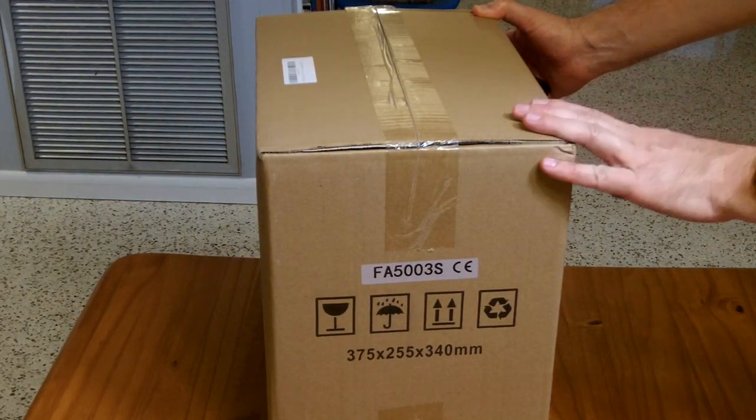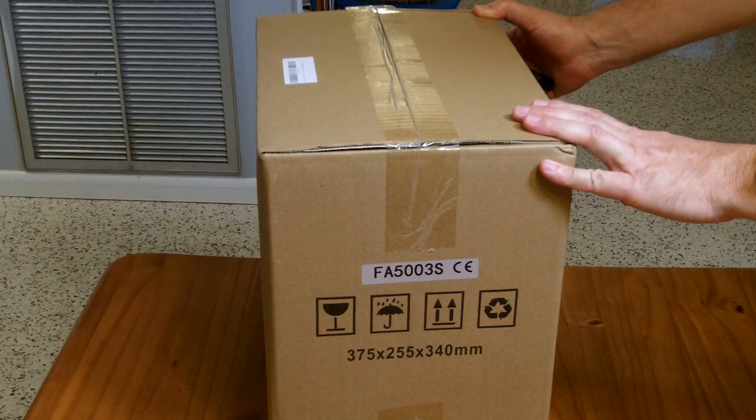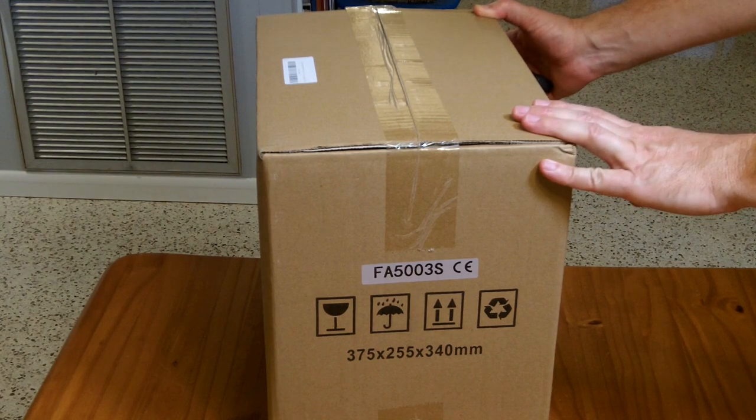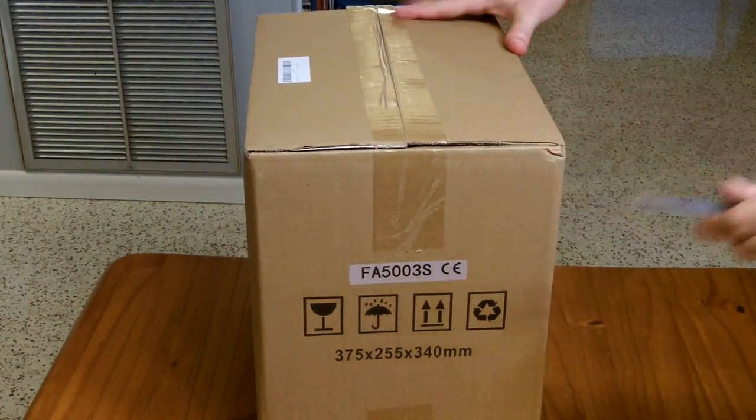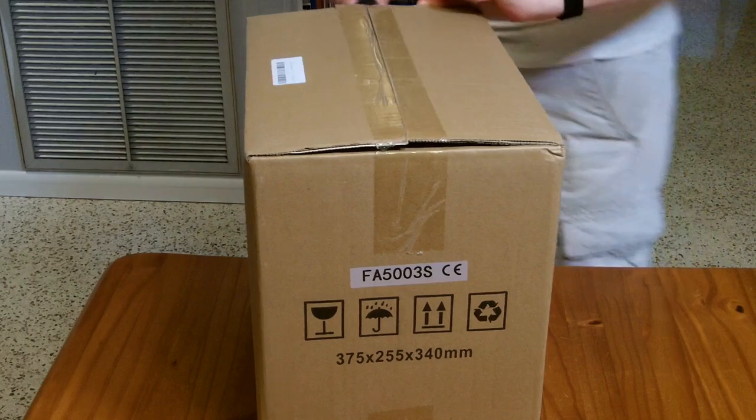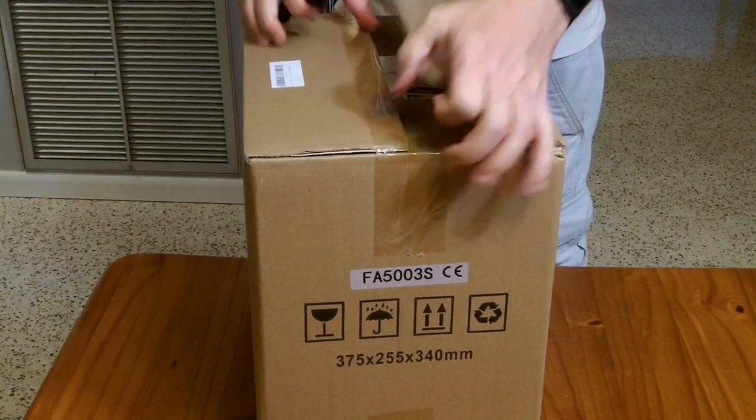So this is a 500 gram scale, except when they're this precise and expensive you can't call them a scale, you have to call them an analytical balance. This is a JoanLab 500 gram analytical balance and it is accurate to a thousandth of a gram or a milligram.